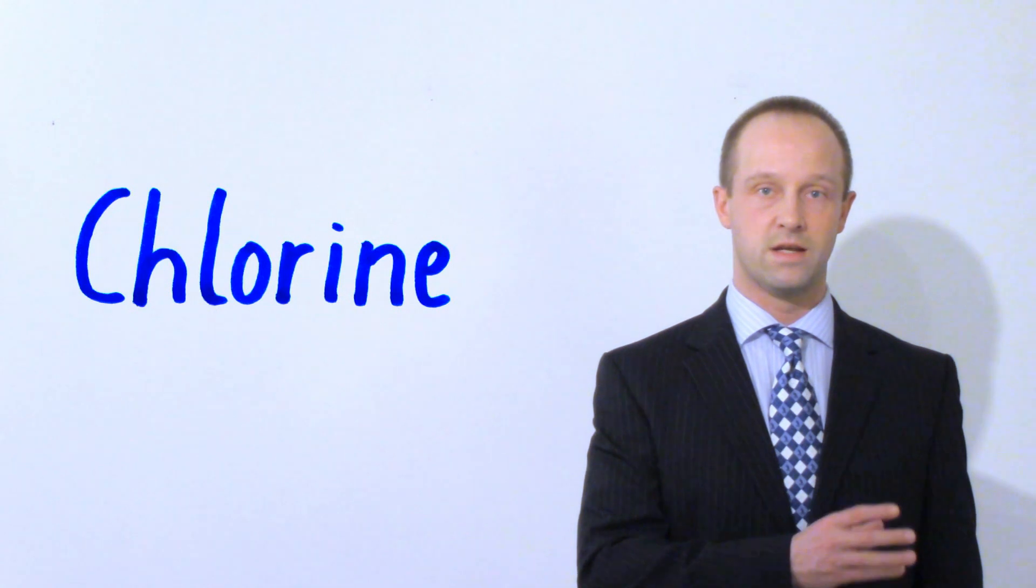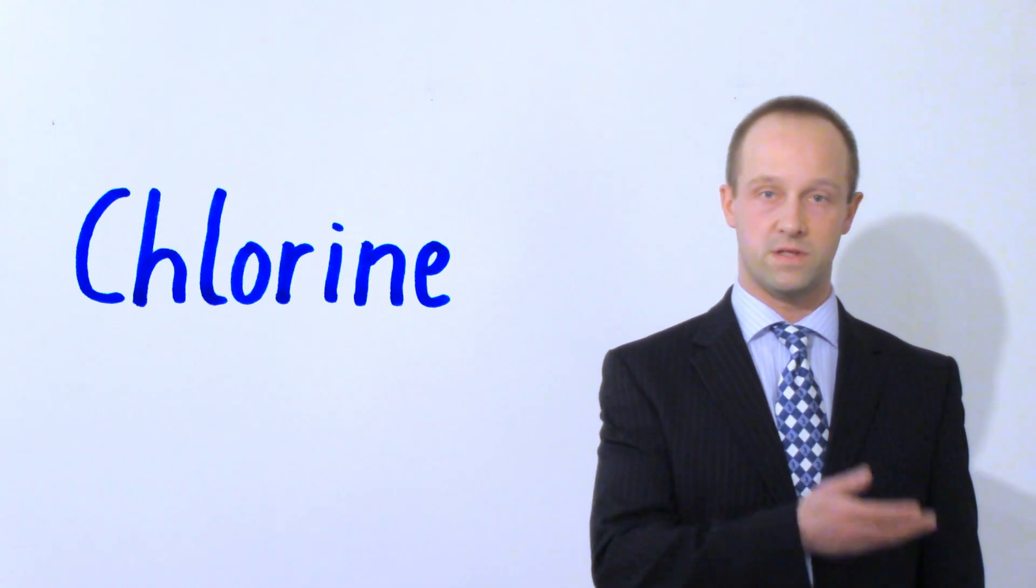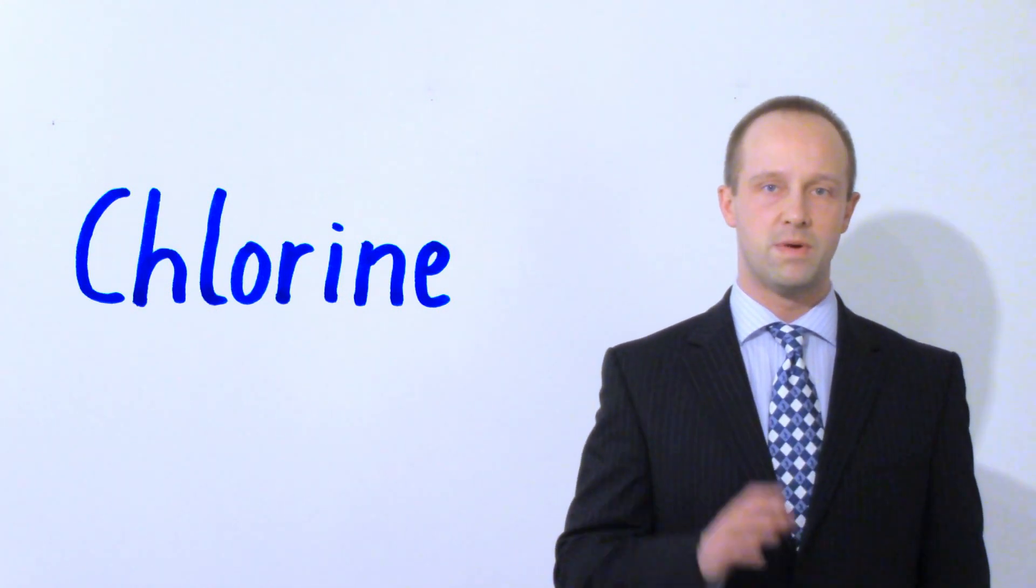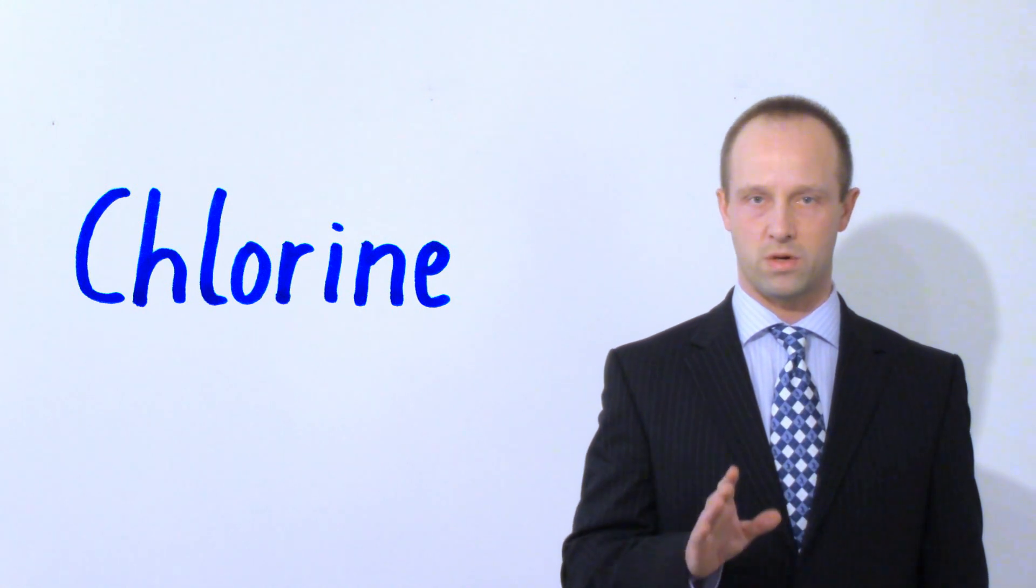So going back to the sodium chloride example, again, sodium is the metal, so that goes towards the cathode. And chloride ions come out of solution and form chlorine gas and go towards the anode, and they're given off as chlorine gas at the anode. But that's where it gets a little bit more complex.